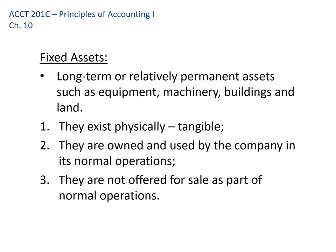So we'll start with what are fixed assets. These are long-term or relatively permanent assets — equipment in a factory, machinery, forklifts, trucks, buildings, land. They exist physically; you can see them and touch them. The key thing is they're owned and used by the company in its normal operations. For example, if we have an important machine in our factory and keep a backup copy stored in the back in case the first machine breaks, that second machine is not a fixed asset — it's an investment because it's not being used in operations.